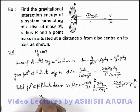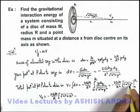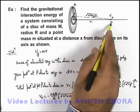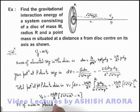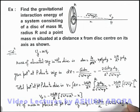Substituting the limits, the potential at point P is minus 2GM divided by R, multiplied by (√(x² + R²) minus x). If this is V_P, then the potential energy of point mass m located at P is mV_P. So the gravitational potential energy is U = minus 2GMm divided by R, times (√(x² + R²) minus x). That is the answer to this problem.